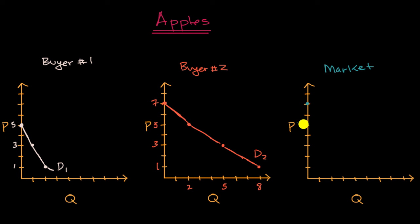And so at a price of five dollars, the market as a whole is willing to buy two pounds from buyer two and zero pounds from buyer one. So we'll have a total of two pounds. So that is at five dollars per pound. The market is demanding a quantity of two pounds per week.